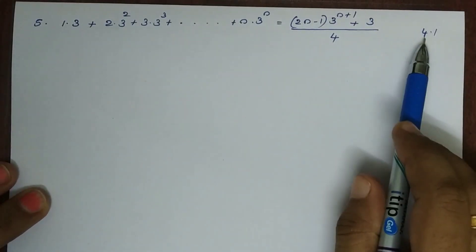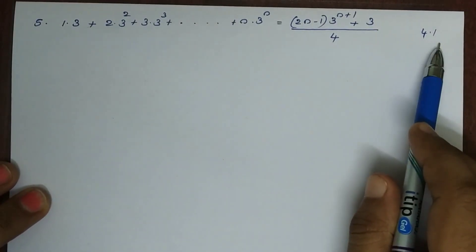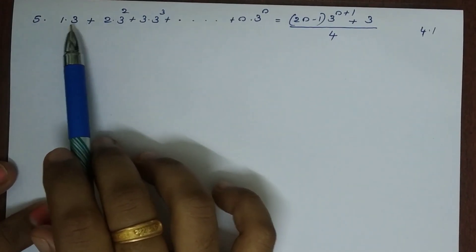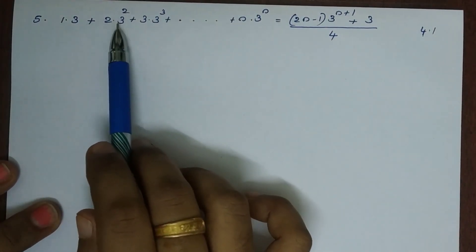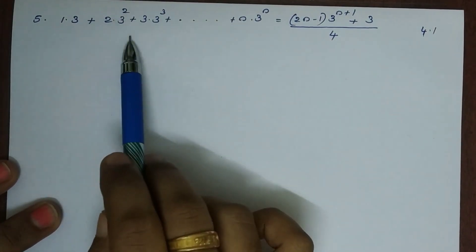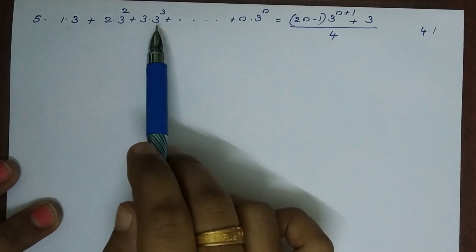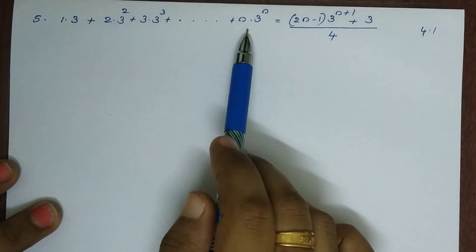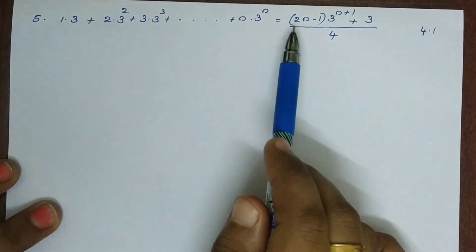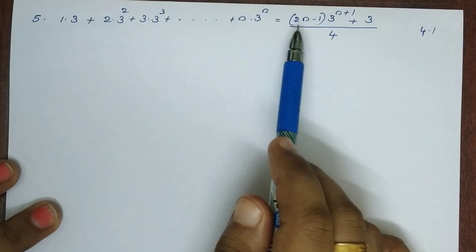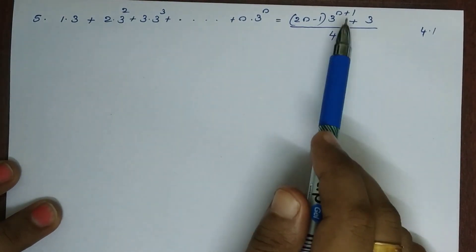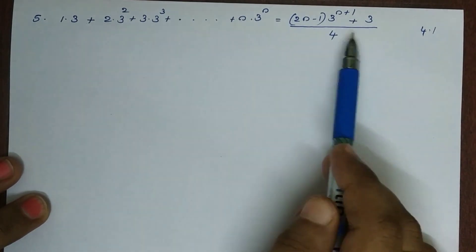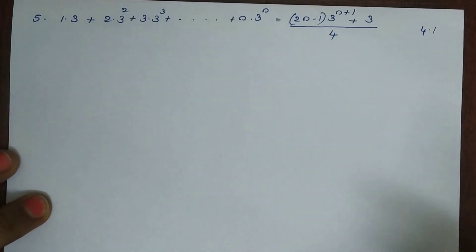Now we have exercise 4.1, fifth problem: 1 into 3, plus 2 into 3 squared, plus 3 into 3 cubed, plus etc., plus n into 3 raise to n, is equal to 2n minus 1 into 3 raise to n plus 1, plus 3, the whole divided by 4.